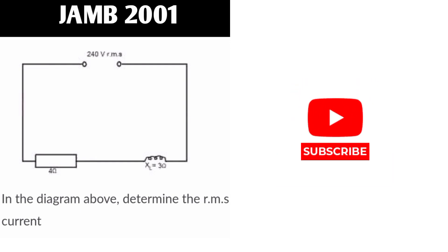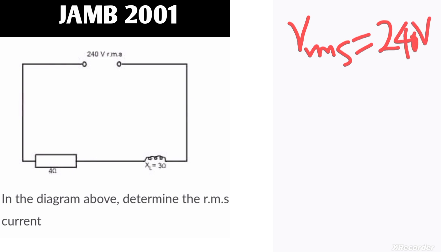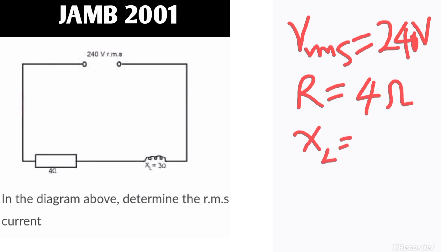From the diagram we are given: v_rms = 240 volts, resistance R = 4 ohms, and the inductive reactance X_L = 3 ohms. We are looking for the RMS value of the current, i_rms.